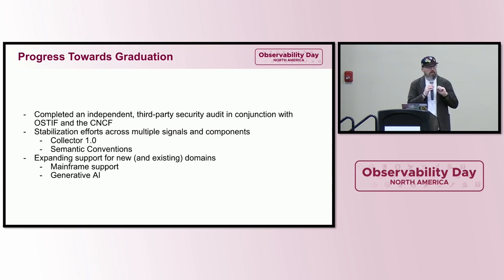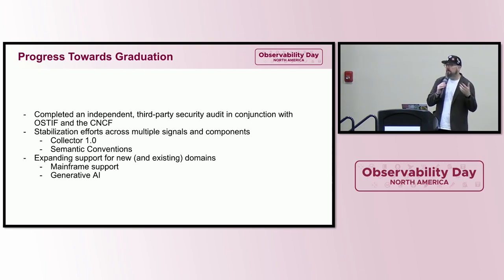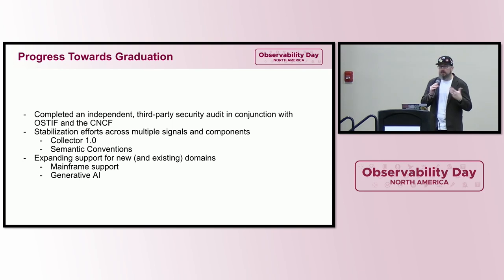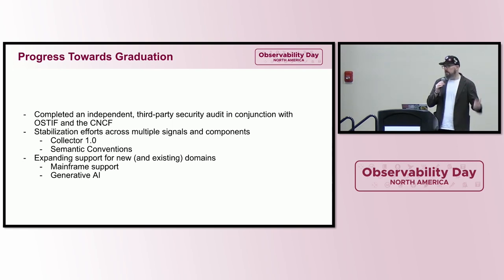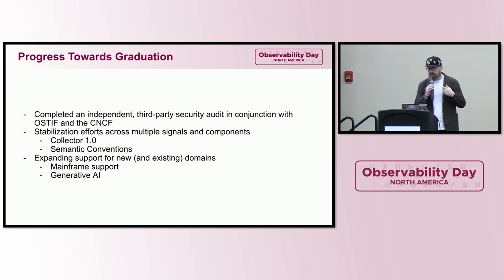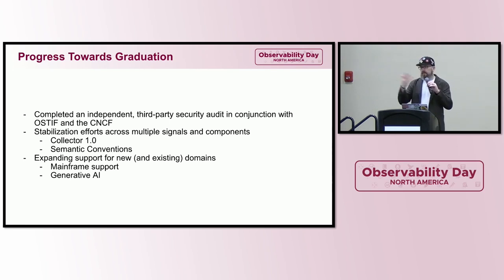We've also started adding fuzzing to the collector so that we can find new and novel bugs. We continue to try to stabilize a lot of the OpenTelemetry surface area — the collector is a big part of that, and we've been working towards getting a 1.0 version of it. We've also been making a lot of effort around semantic conventions. Database semantic conventions are now release candidate, and we stabilized HTTP earlier.